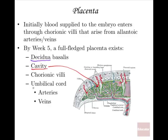The umbilical cord has arteries going into the baby and veins going back to the mother. When birth happens, the placenta comes out — called the afterbirth — because the other end of the umbilical cord is the placenta. Once the baby is born, there's no need for the placenta, so it comes out after the baby.